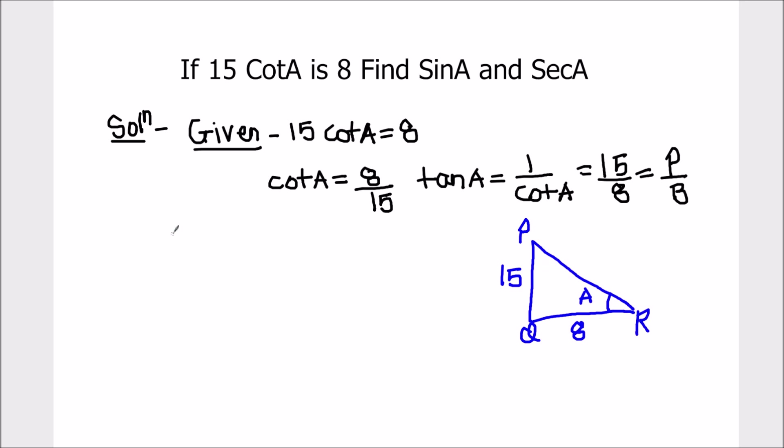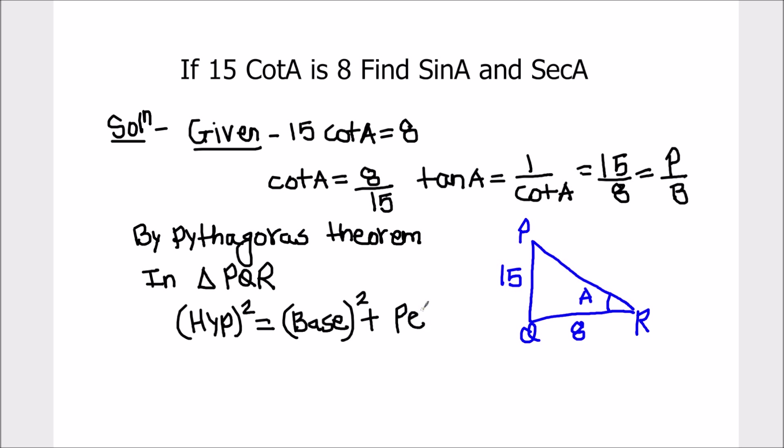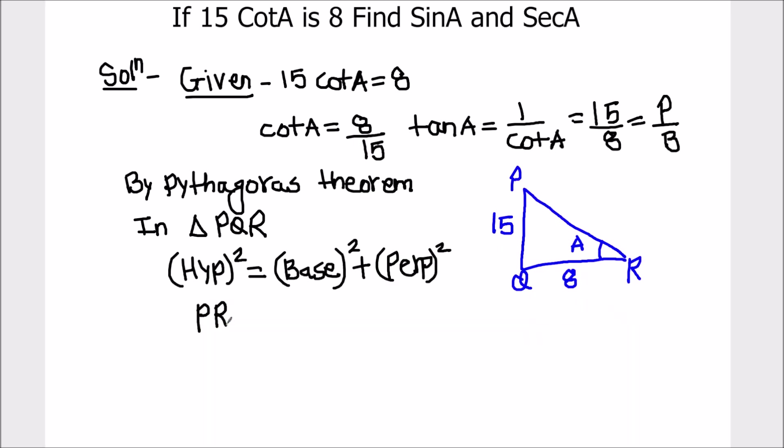In this triangle we are going to apply Pythagoras theorem. By Pythagoras theorem in triangle PQR, hypotenuse squared equals base squared plus perpendicular squared. We can write it as PR squared equals QR squared plus PQ squared.